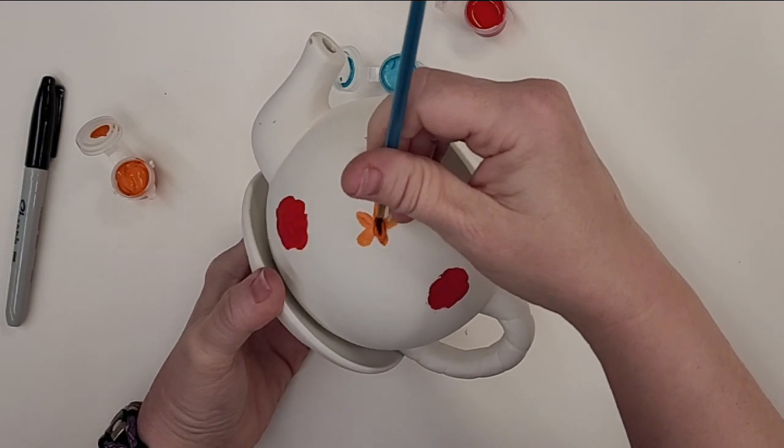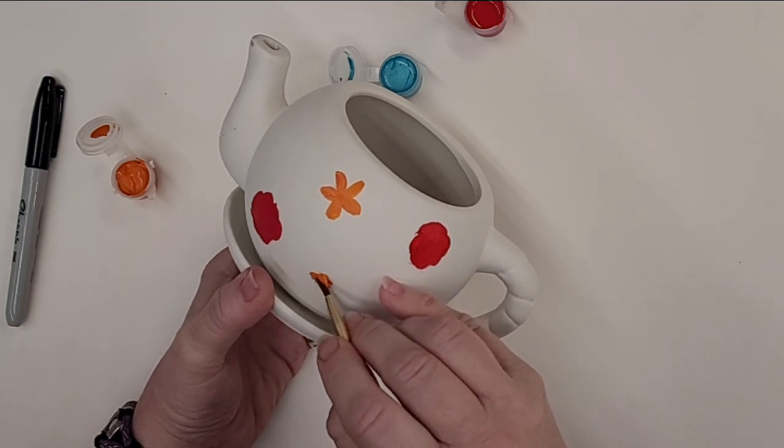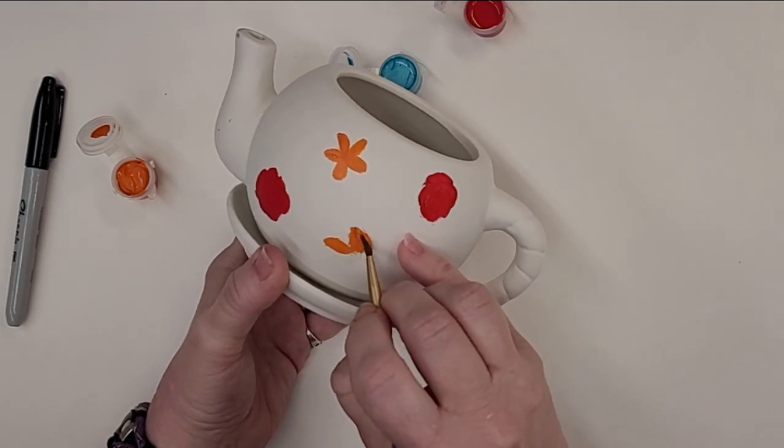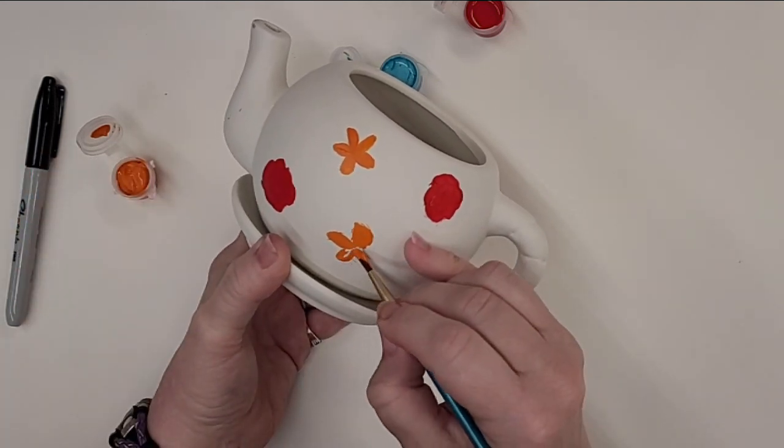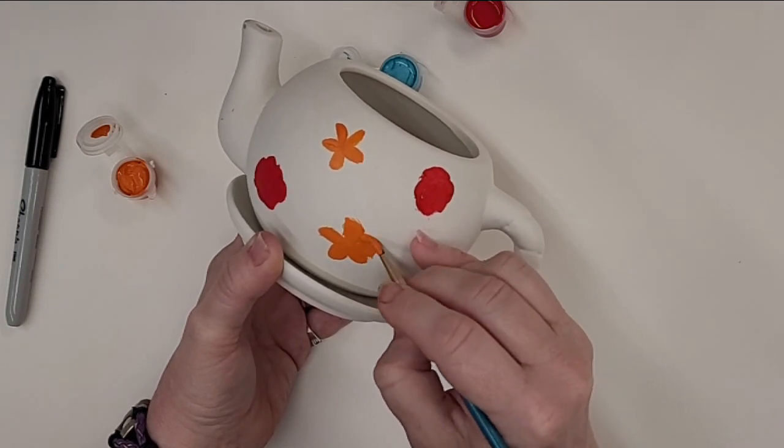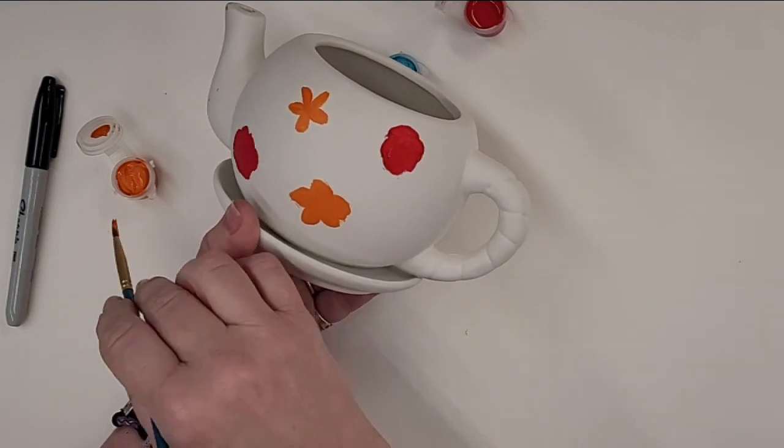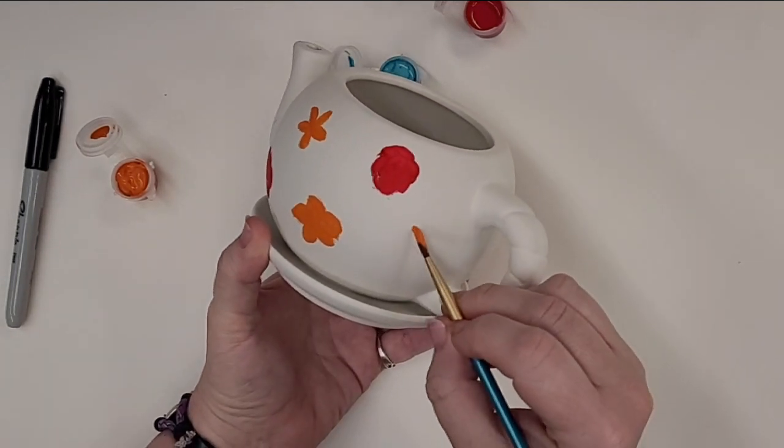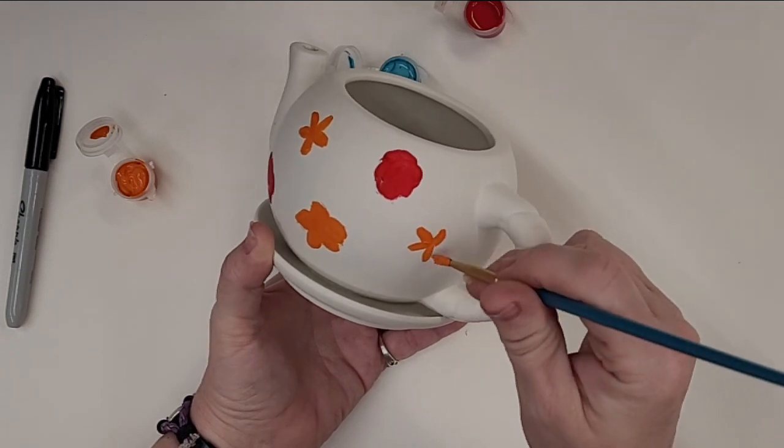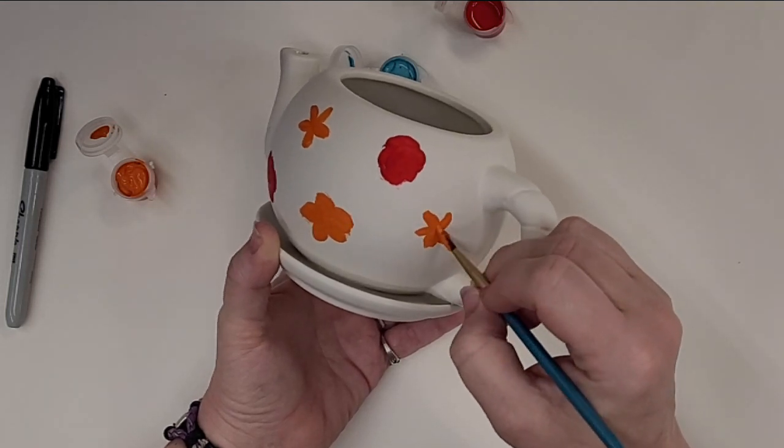And you can do five or six or seven petals. It doesn't really matter. You can do big fat round petals like that, or you can do small little ones, or a mixture of the two. Now these don't have to be perfect because flowers are in nature and nature is not perfect. So some of them are bigger, some of them are smaller.